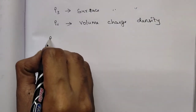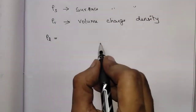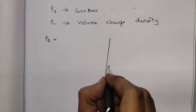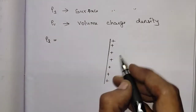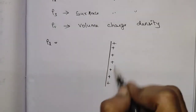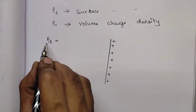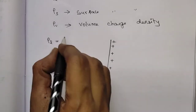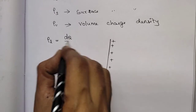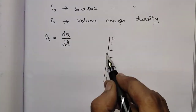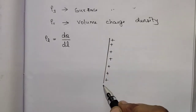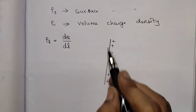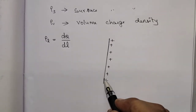So how do we define rho_L? For example, in a line there are a lot of charges distributed along a particular line. The charge density of this line — how many charges are there in this particular line — is known as line charge density, which is charge per unit length, defined as DQ divided by DL.